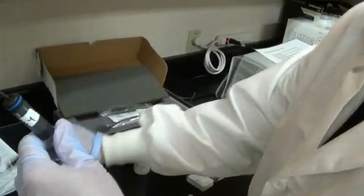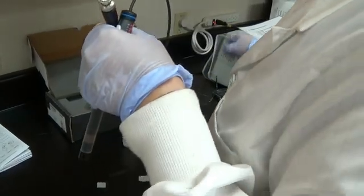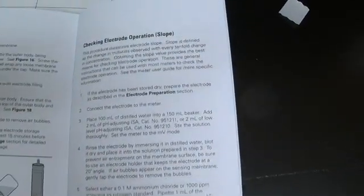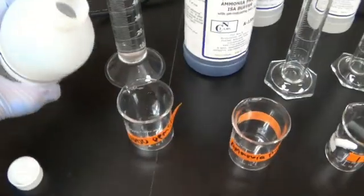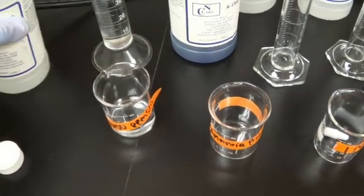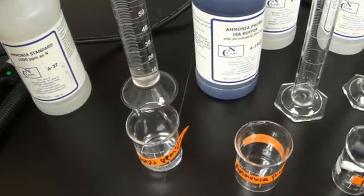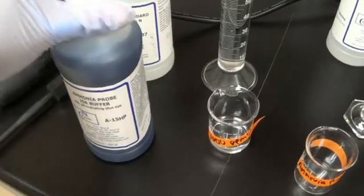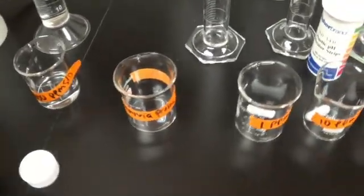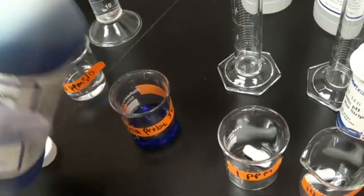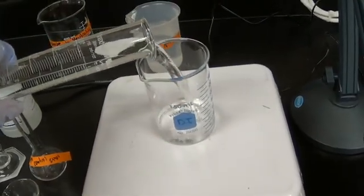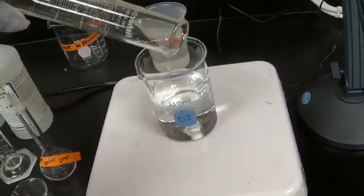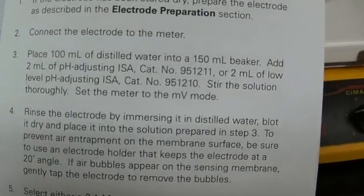Next thing is I hook it to the machine and put it in the storage solution. And we should be ready in about 15 minutes. Next we're going to do the slope test. So first I'm going to pour off a little bit of my 1000 standard into a labeled beaker, pour off a little bit of my ISA buffer to a labeled beaker. So first I'm going to add my 100 ml of DI water. Next it says to add the 2 ml of the ISA.